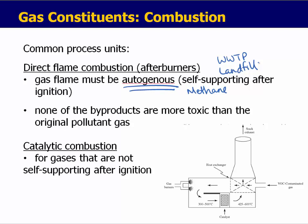None of the byproducts can be more toxic than the original pollutant gas, or an afterburner would not be an appropriate solution. The other option is a catalytic combustion unit or catalytic converter. This is for gases that are not self-supporting after ignition. The contaminated gas, laden with volatile organic compounds or hydrocarbons, along with a gas burner that adds heating value, makes the flare go.